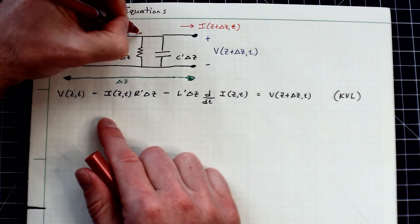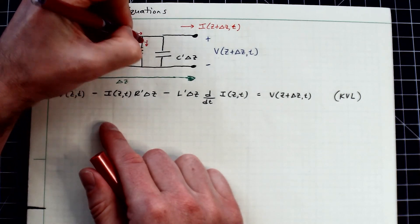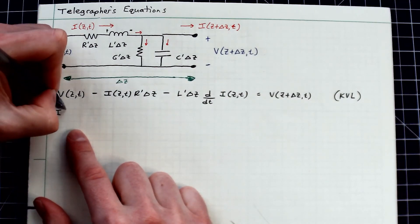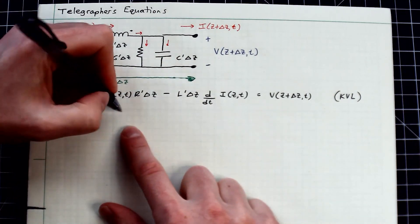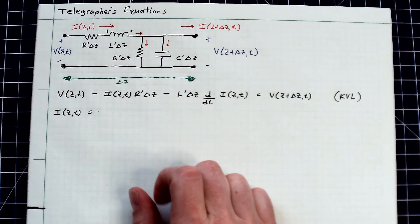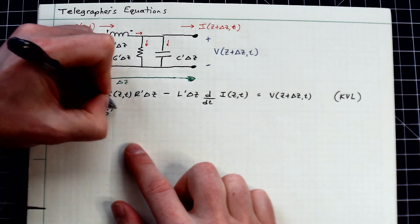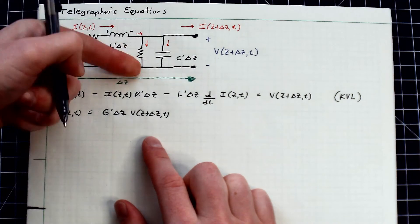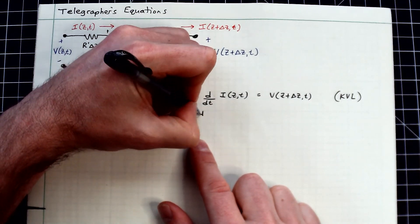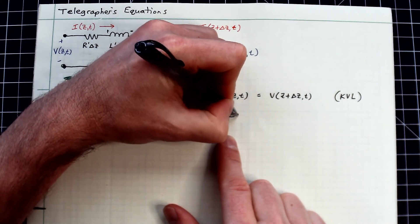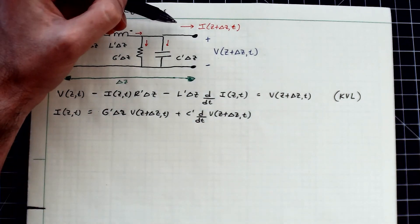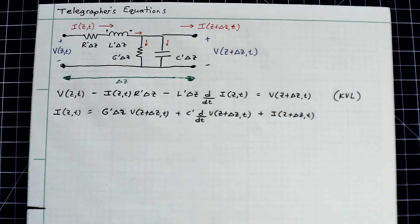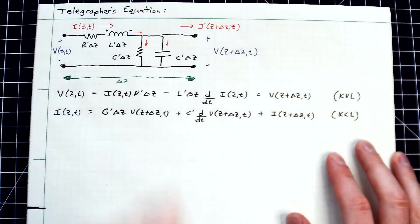Now we apply Kirchhoff's current law: the current entering this node I(z, t) equals the sum of all currents leaving. There's some current leaving through the conductance — expressed as G-prime delta-z times V(z + Δz, t) — another bit leaving through the capacitance — C-prime times the time derivative of V(z + Δz, t) — and then the remaining current leaving out the other side as I(z + Δz, t).